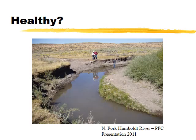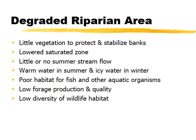An unhealthy system, according to proper functioning condition, is basically the opposite: little vegetation to protect stream banks, a lowered saturation zone or water table, little or no summer stream flow, warmer water in the summer and icy water in the winter, poor fish and aquatic organism habitat, and low forage production and habitat diversity. These characteristics depend on stream type — high mountain streams may never have summer flow and may be anchored by rocks and gravel rather than vegetation.